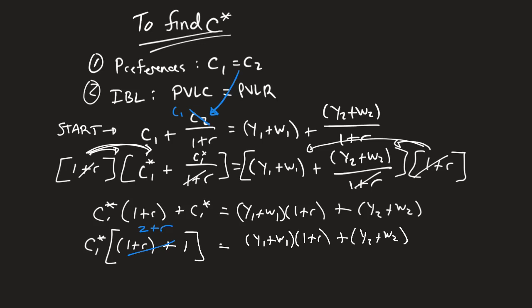1 plus R plus 1 is 2 plus R. So if I want to solve just for my C1, I'm going to divide both sides by 2 plus R. So divide this by 2 plus R. And what that means is this right here is equal to, this will cancel out.